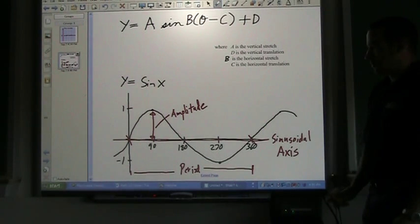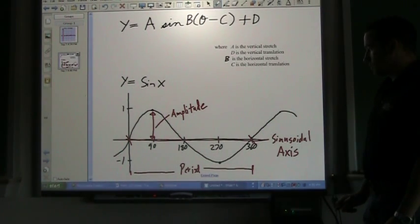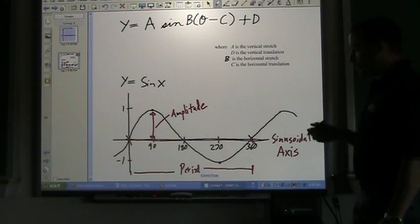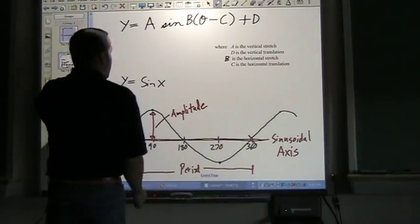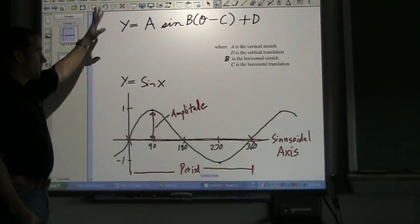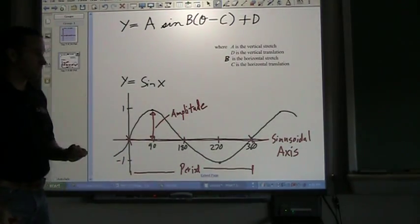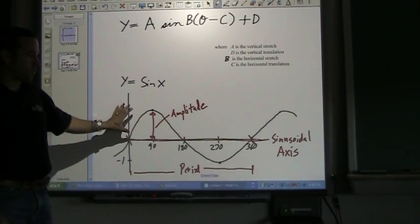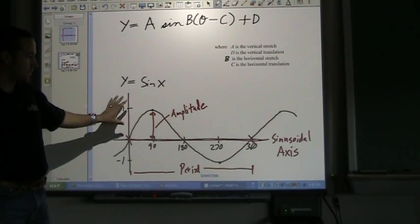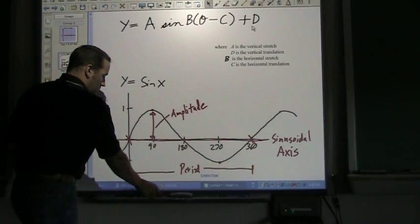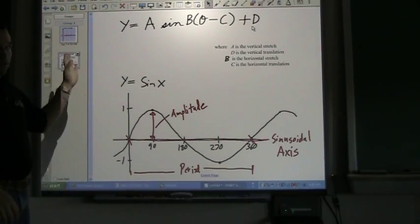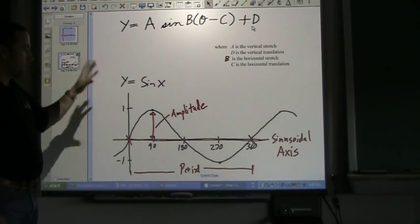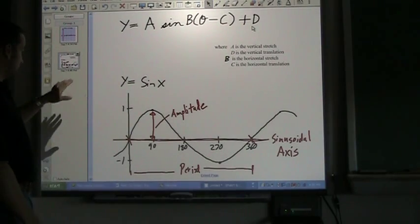So there it is. Those are the major properties that we're going to talk about when it comes to sine waves. So again, there's the general equation, what each thing means, and then a couple of the properties. Now let's do a concrete example. Graphing these is quite easy once you know the properties and the method. So let's do an example.